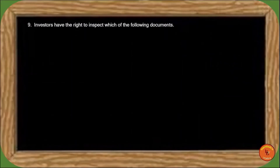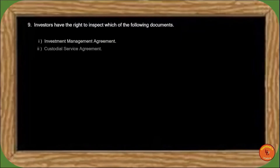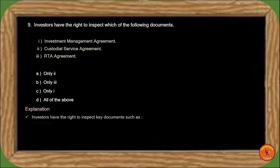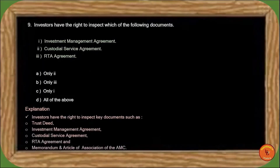Next question: Investors have the right to inspect which of the following documents? Any investor has the right to inspect documents such as the trust deed, investment management agreement, custodial service agreement, RTA agreement, and memorandum and articles of association of the AMC. So the correct answer is option D, all of the above.